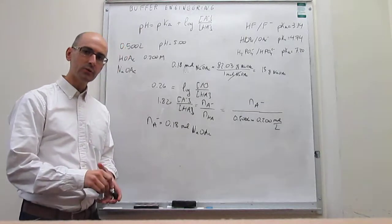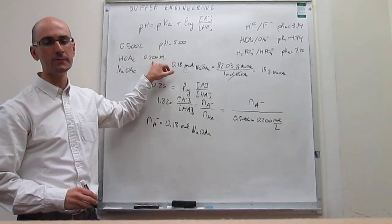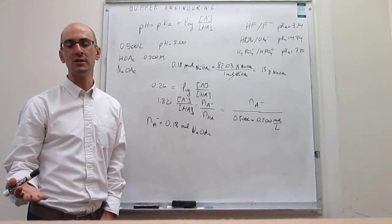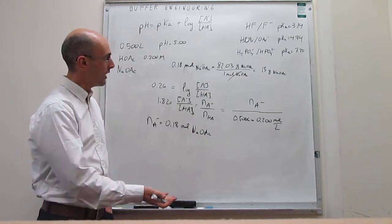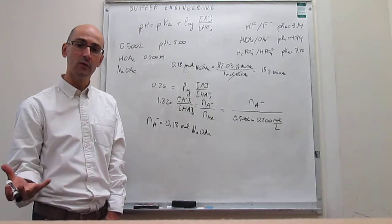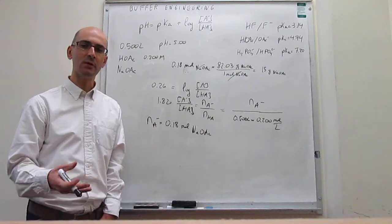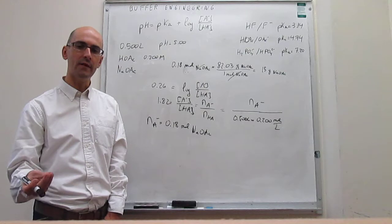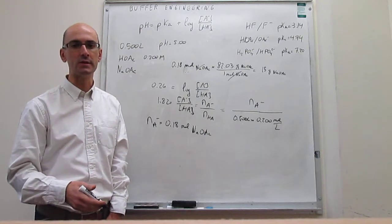So this is how you prepare the solution: take half a liter of the 0.2 M acetic acid stock solution, then add 15 grams of solid sodium acetate. We assume the volume doesn't change dramatically so you still end up with about half a liter. According to the Henderson-Hasselbalch equation, the pH of that solution will be equal to 5 — exactly the target pH. In summary, we've done a bit of buffer engineering: manipulating the amounts of weak acid and conjugate base to reach a target pH for any given application.